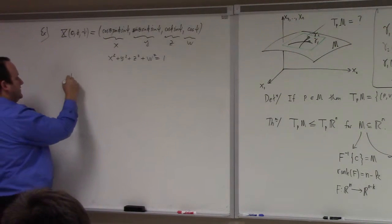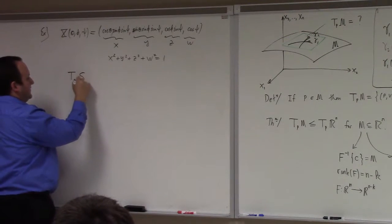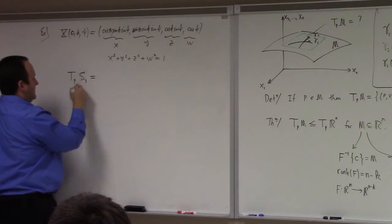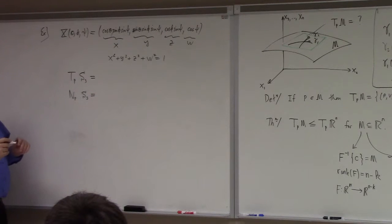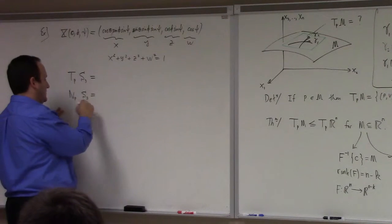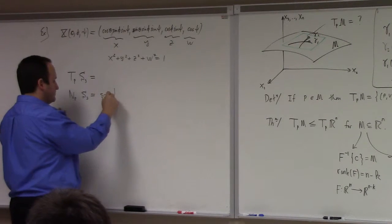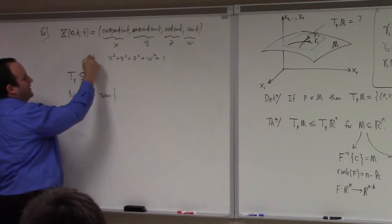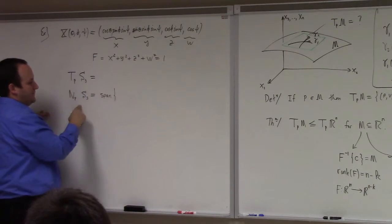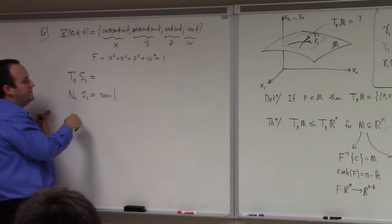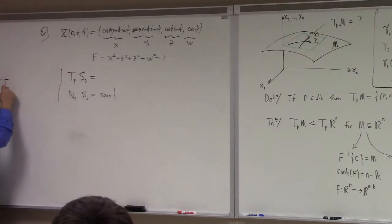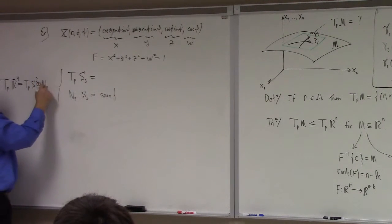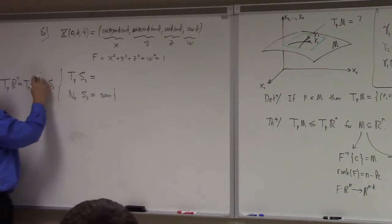So, if you want to find the tangent space at a point P of the 3-sphere, what should you do? Versus, if you want to find the normal space at P of the 3-sphere, what should you do? Here's what you do. The normal space is just the span of gradient of f. The tangent space at P to R4 is the direct sum of these two things.